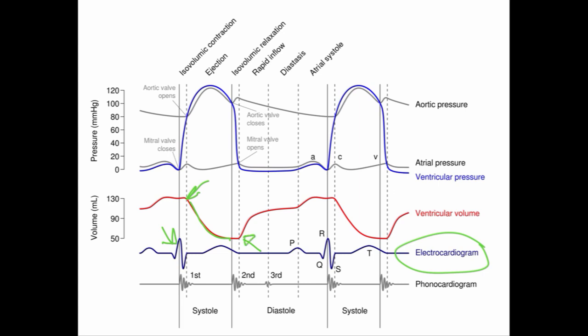At this point, the mitral valve opens because the left atrial pressure supersedes the left ventricular pressure. Now you have volume increasing — first rapidly, due to rapid filling, and then more slowly as ventricular filling progresses. Then you have another rapid increase in ventricular volume because of the left atrial kick, and the cycle repeats.